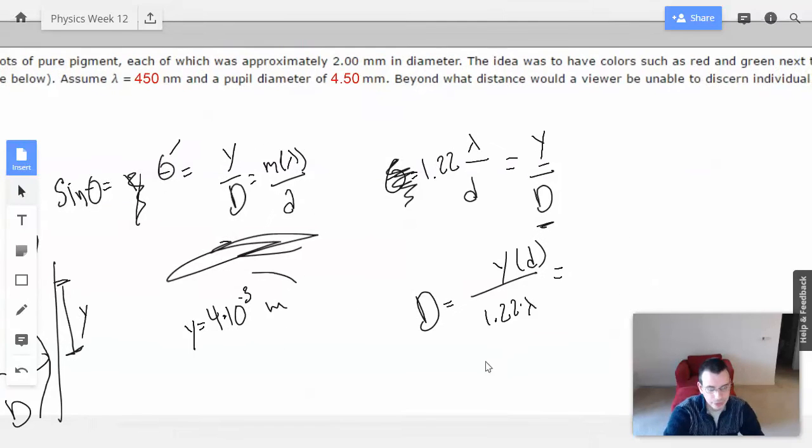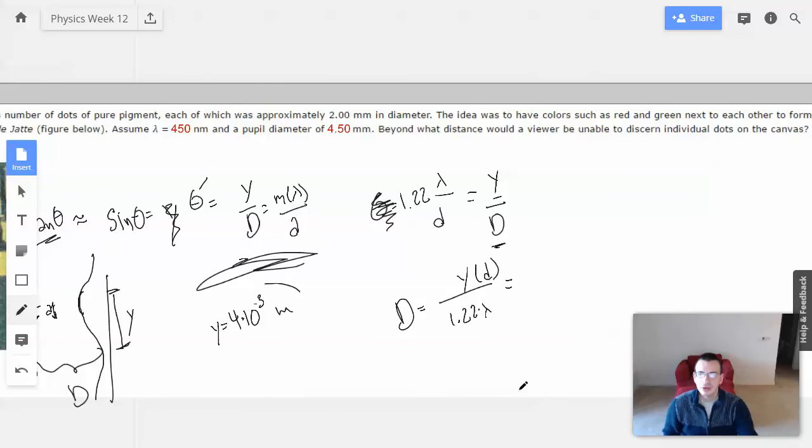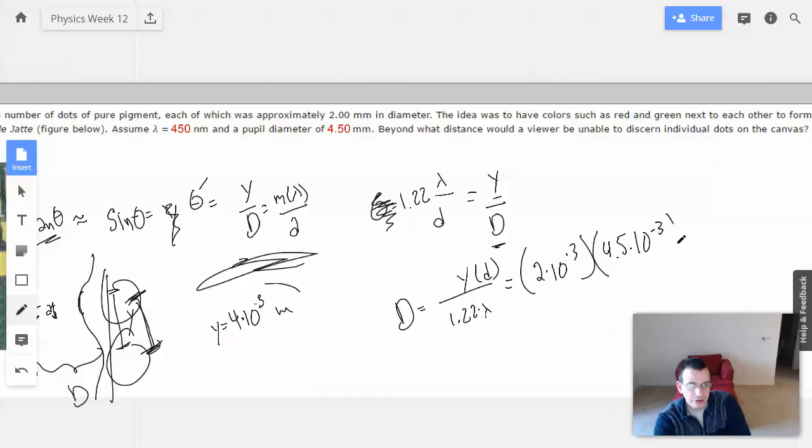Y is 2 millimeters in diameter, so the distance between two of them center to center would be 2 millimeters, or 2 times 10 to the negative third. The diameter of the pupil will be 4.5, or 4.5 times 10 to the negative third. The wavelength is 450, which is 4.5 times 10 to the negative seventh.